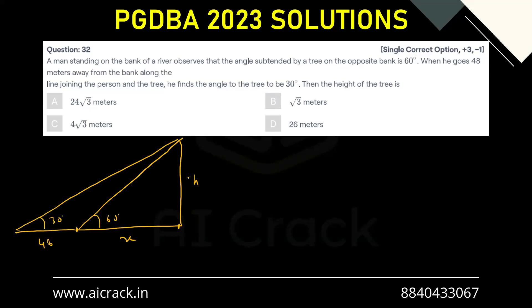Now we have to find out the height h. So you can say that h by x equals to tan theta, that is tan 60 degrees, right? This would be root 3. So this gives us h equals to x root 3. This is our first equation.